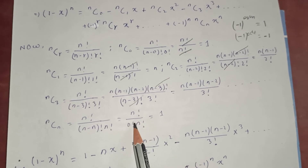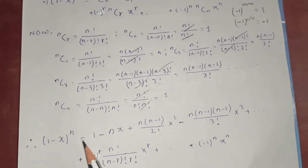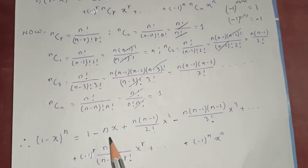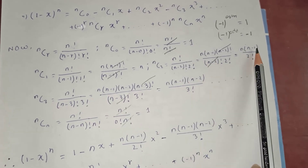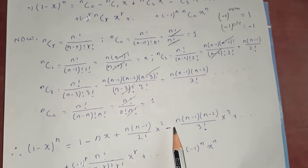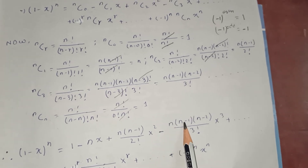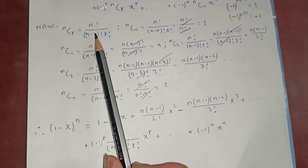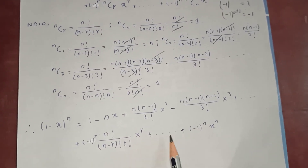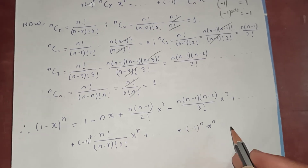Therefore, putting all these values into our equation, (1 minus x) to the power n equals 1 minus nx, plus n(n minus 1) over 2 factorial times x squared, minus n(n minus 1)(n minus 2) over 3 factorial times x cubed, plus so on, plus (minus 1) to the n times x to the n. This is the proof of the expansion of (1 minus x) to the power n using the binomial theorem.